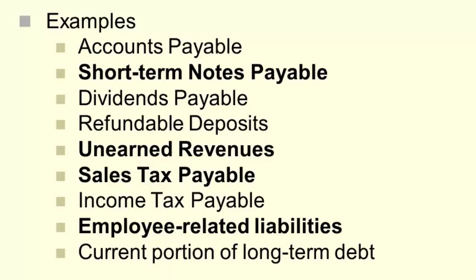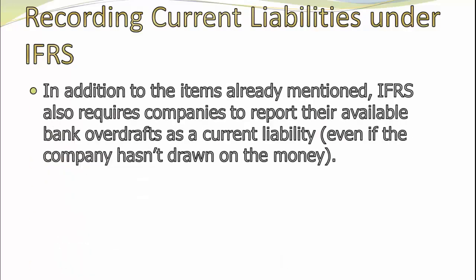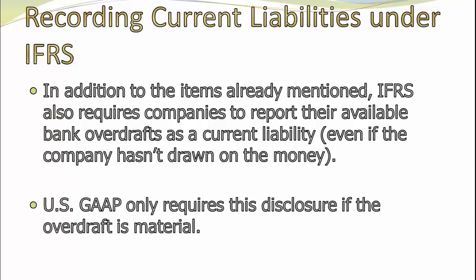Before we jump into our examples, I want to take a second and talk about some IFRS differences. There really isn't a lot of difference between US GAAP and IFRS for current liabilities — at least not for determinable current liabilities. IFRS does require that if you're reporting under IFRS, you include your bank overdraft as a current liability, even if you're not using it. Under US GAAP, we require it only if it's material, and very rarely is an overdraft account material. So really this is the only difference — I know it's one we've mentioned before, but I wanted to bring it up again as part of our discussion of current liabilities.